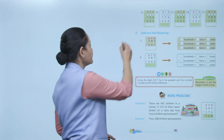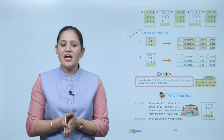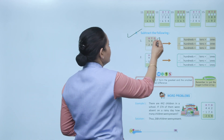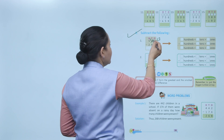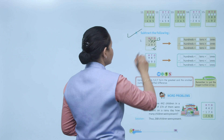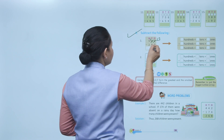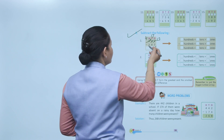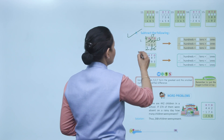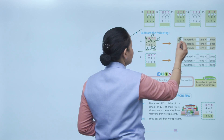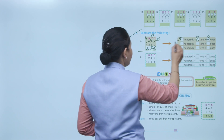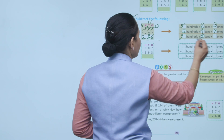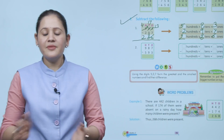Subtract the following: we have to subtract 297 from 583. Ones: borrow to get 13, 13−7=6. Tens: borrow, 17−9=8, hundreds becomes 4. Hundreds: 4−2=2. Answer is 286.